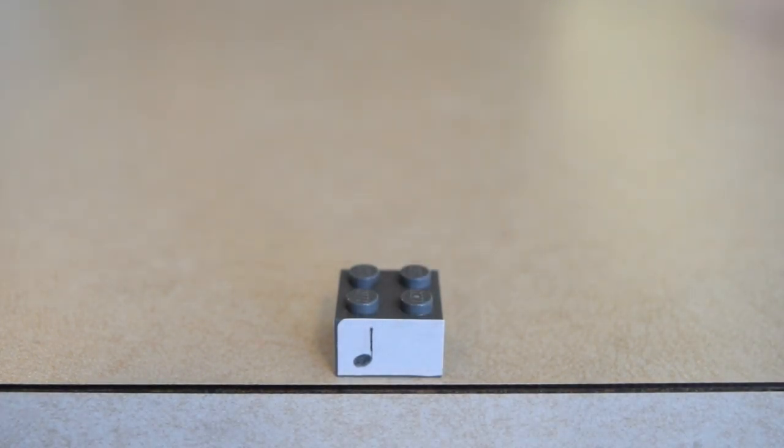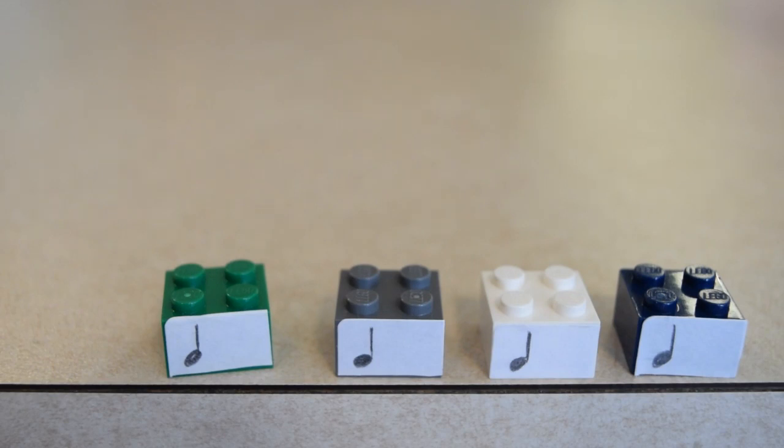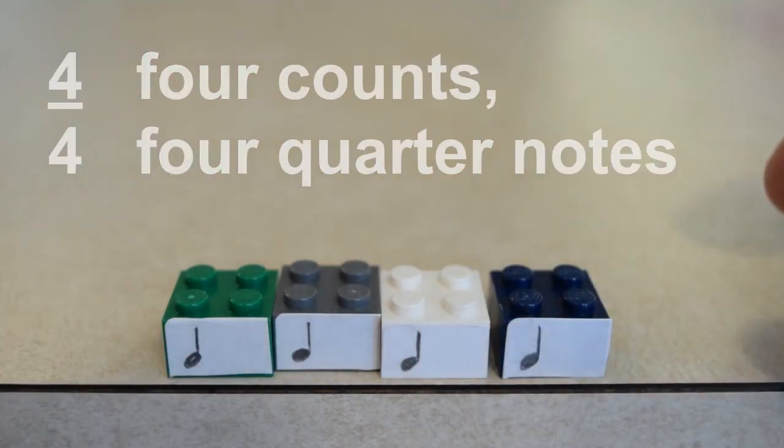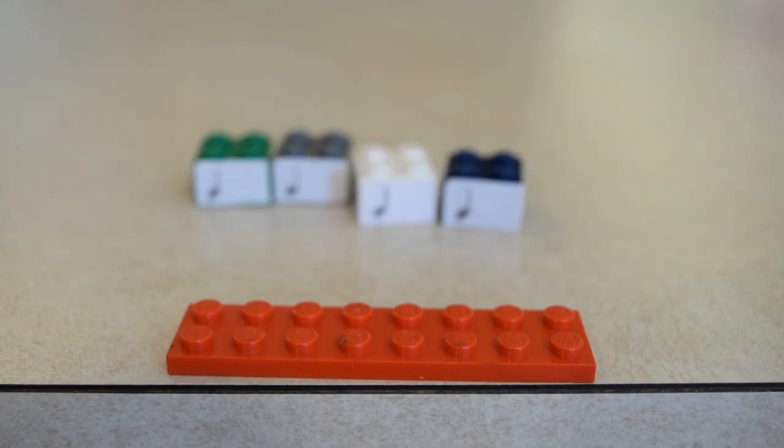There's one quarter note, and if we put together a bunch of quarter notes, we could have a full measure because we know that a full measure in 4/4 time is four quarter notes long.